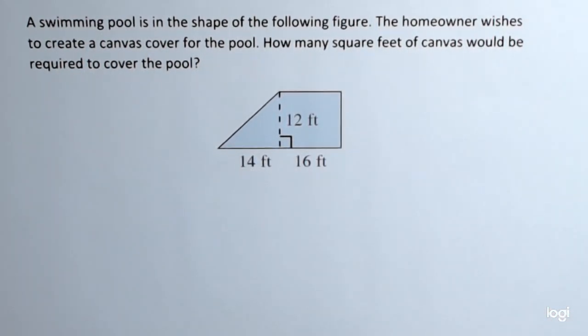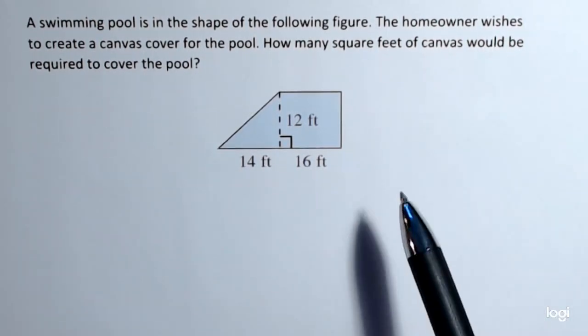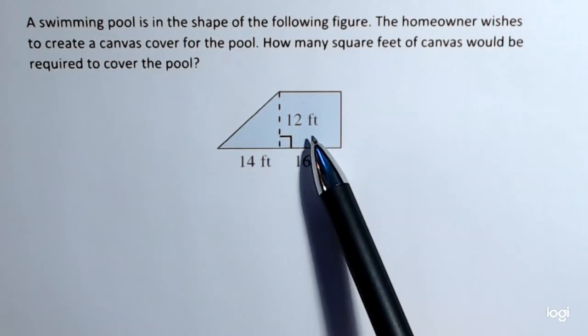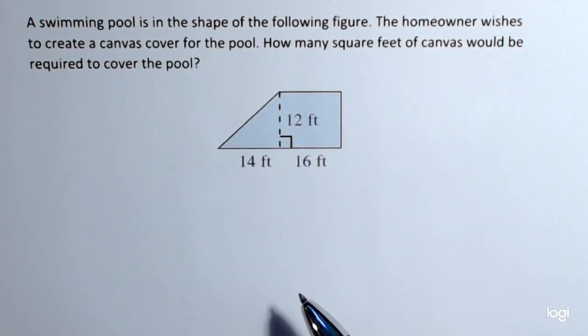So I'm going to do this two ways. I'm going to first find the area of these two distinct figures and then add them together. And then I'm going to find the area using the formula for a trapezoid.